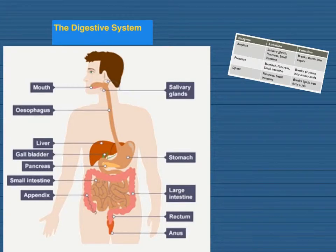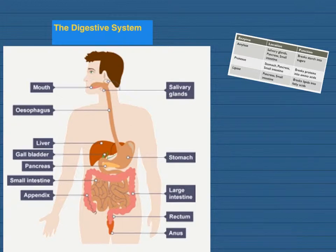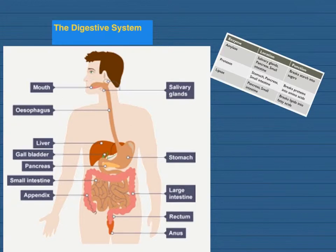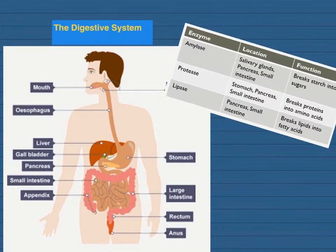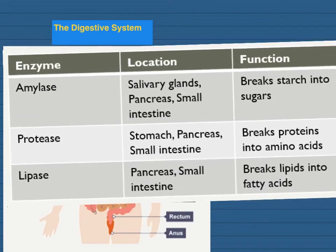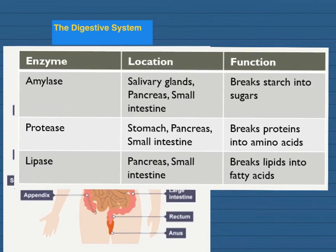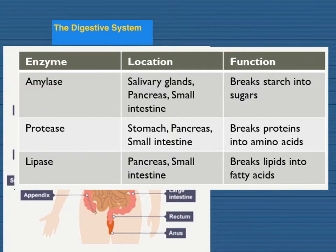The first section covers the human digestive system, which you would have covered in Key Stage 3 Science. The digestive system is a great example of an organ system with several organs working together. It'll be useful if you learn to label the digestive system and also know what each individual part does. An important aspect is enzymes — you'll need to learn the three different enzymes, their locations, and their functions.